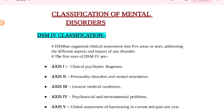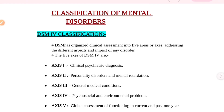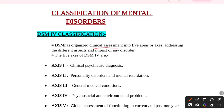To start the video: DSM has organized clinical assessment into five axes. Whatever mental disorders exist, they have been clinically assessed in five areas, addressing the different aspects and impact of any disorder. These axes were created to assess any disorder and identify its different aspects.